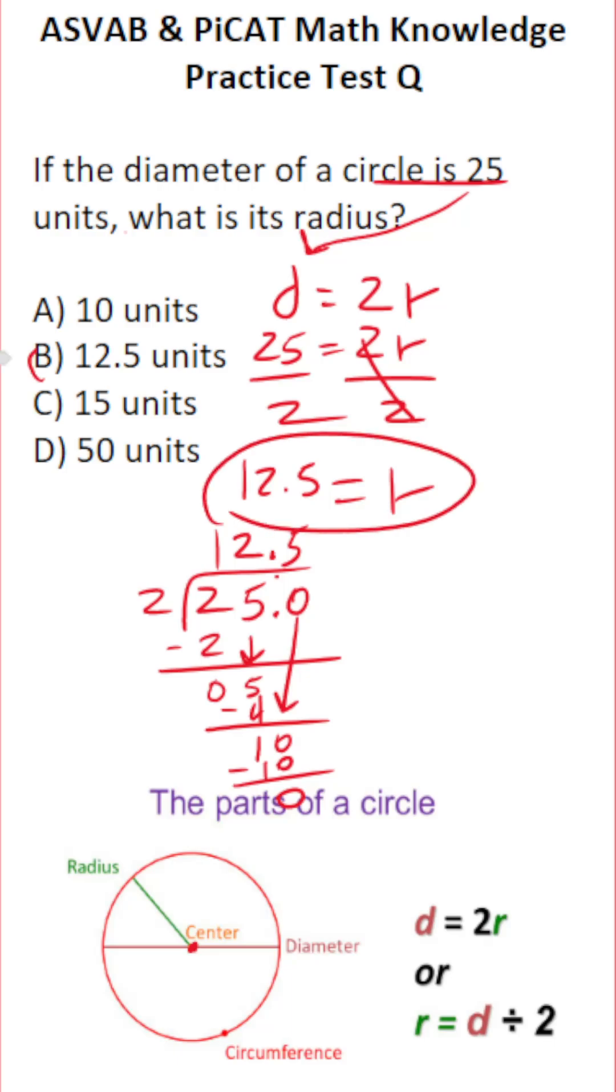So we can see that the radius of this circle is going to be B, 12.5 units if its diameter is 25 units.